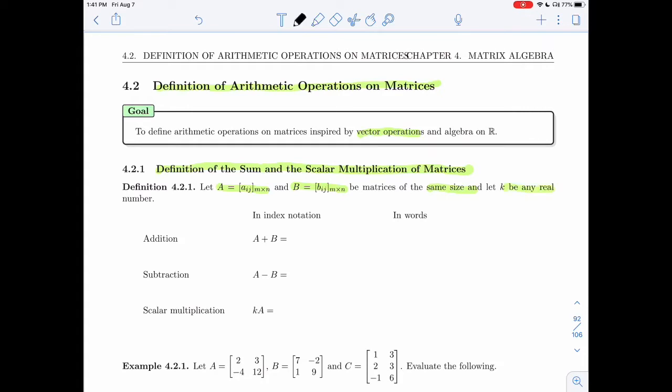All right, so when I write A plus B, what I mean is you take a matrix of the same size as A and B were, but the entries will be the sum of the entries of A and B. So in words, what you do is you just add corresponding entries.